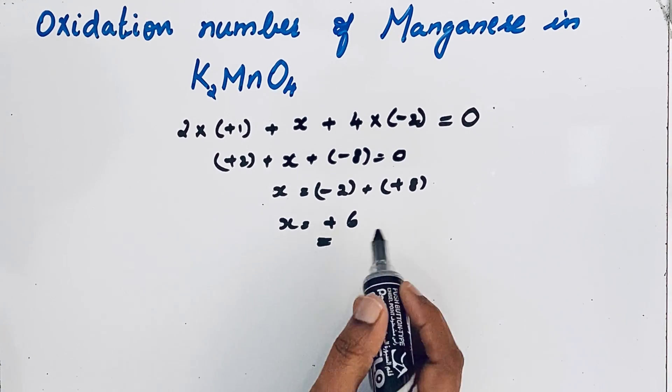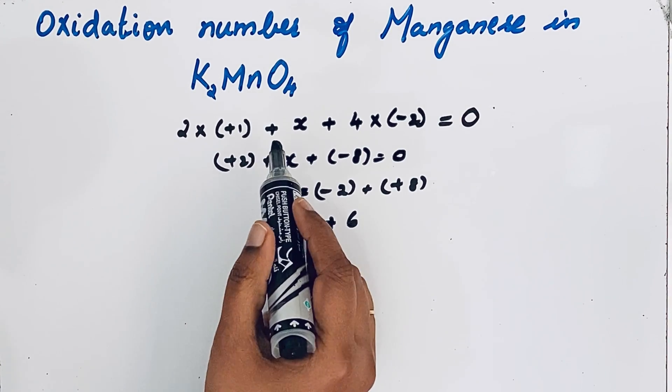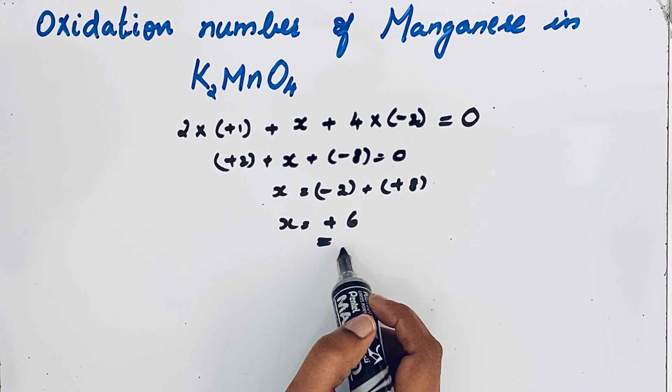So oxidation number of manganese in K2MnO4 is plus six.